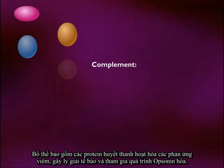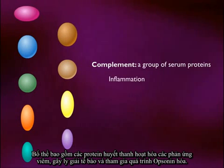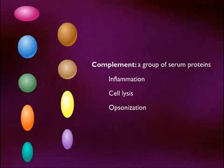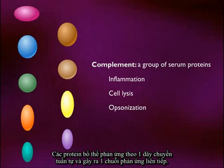Complement consists of a group of serum proteins that activates inflammation, destroys cells, and participates in opsonization. Complement can be activated by a number of different foreign molecules. The complement proteins respond in a sequential manner, producing a cascade of reactions.